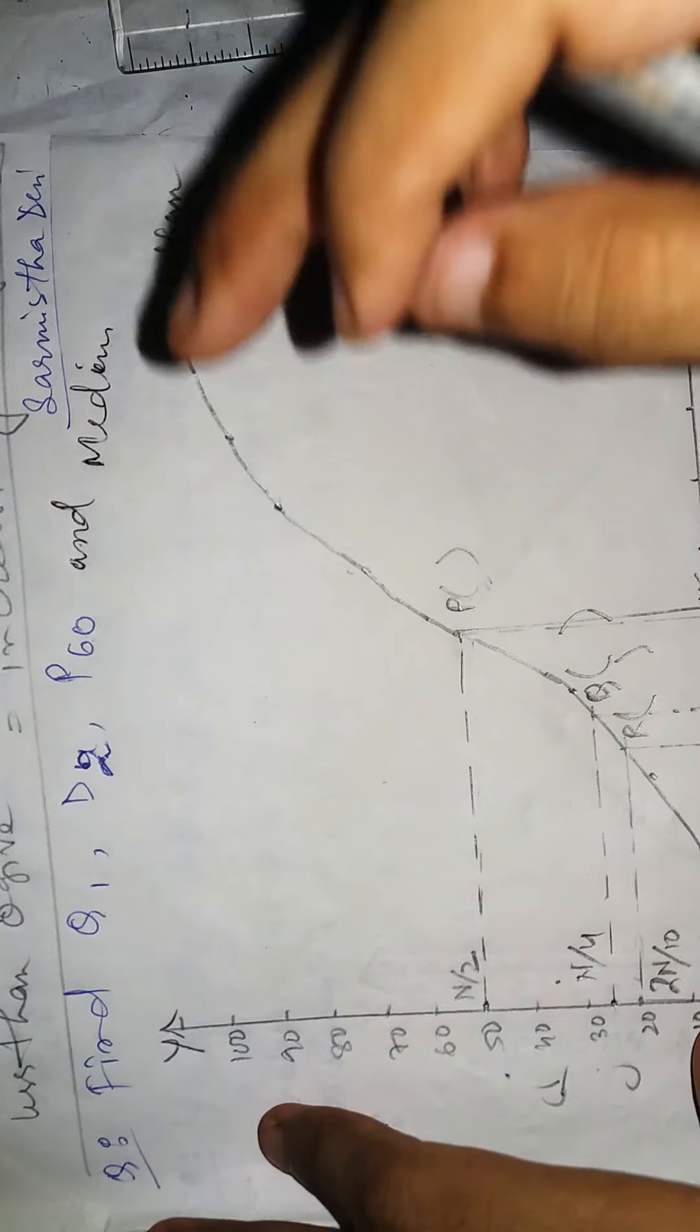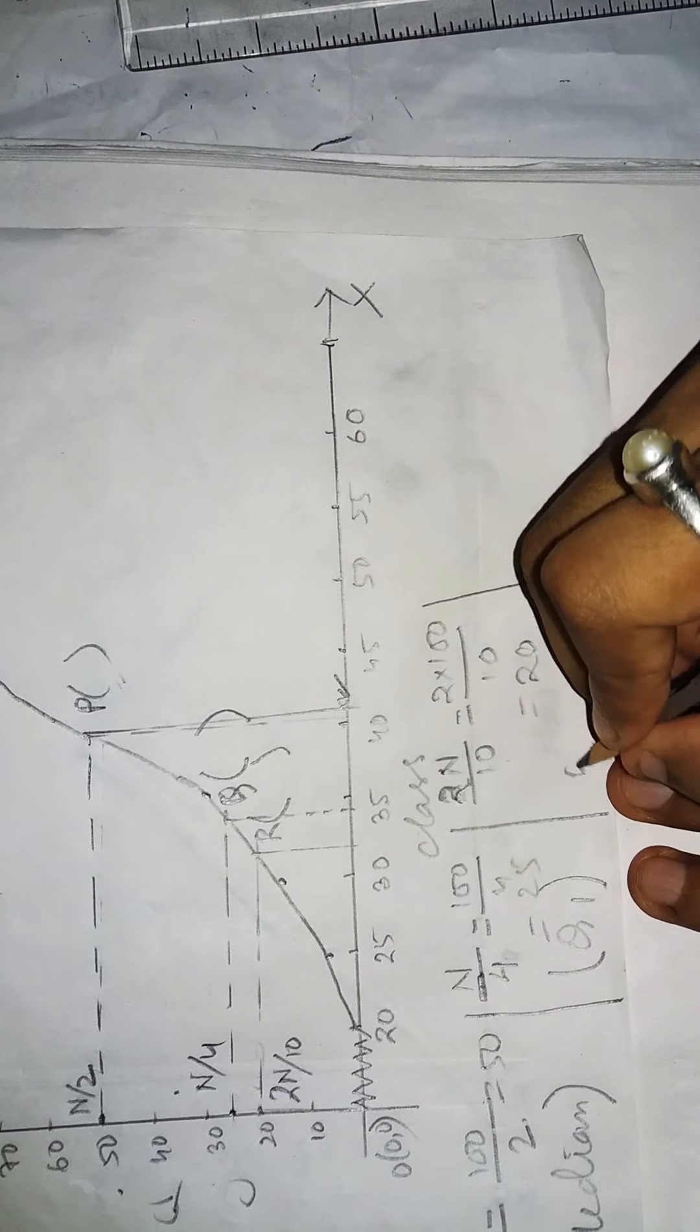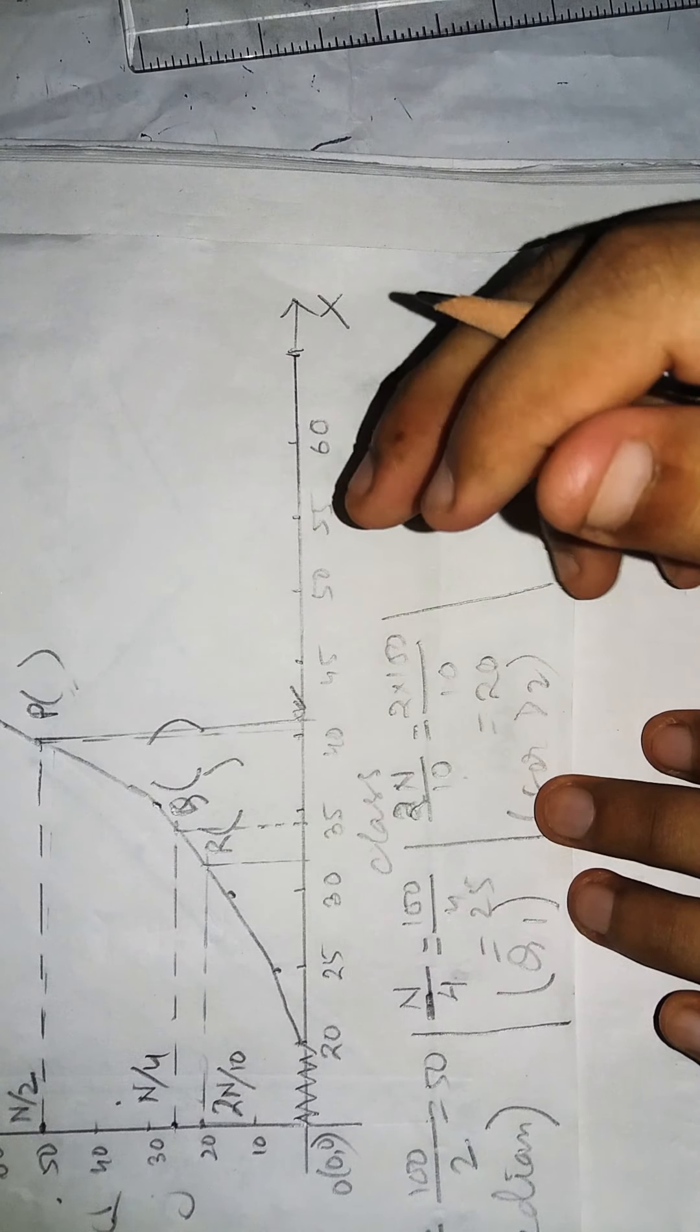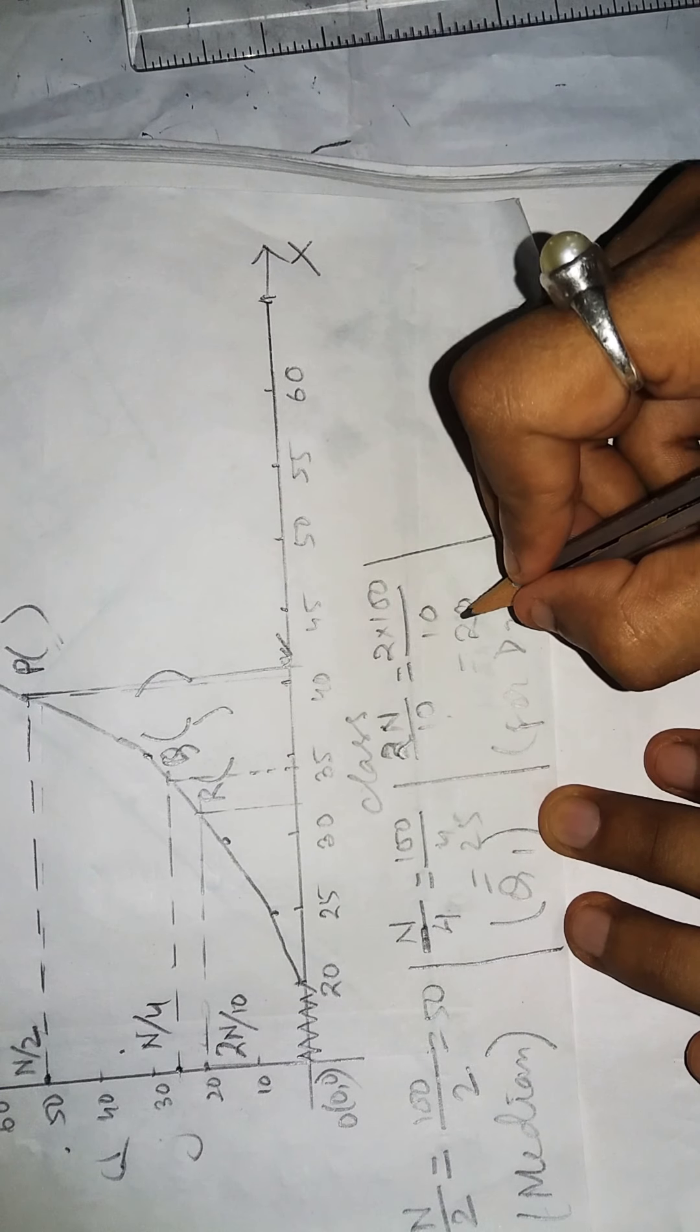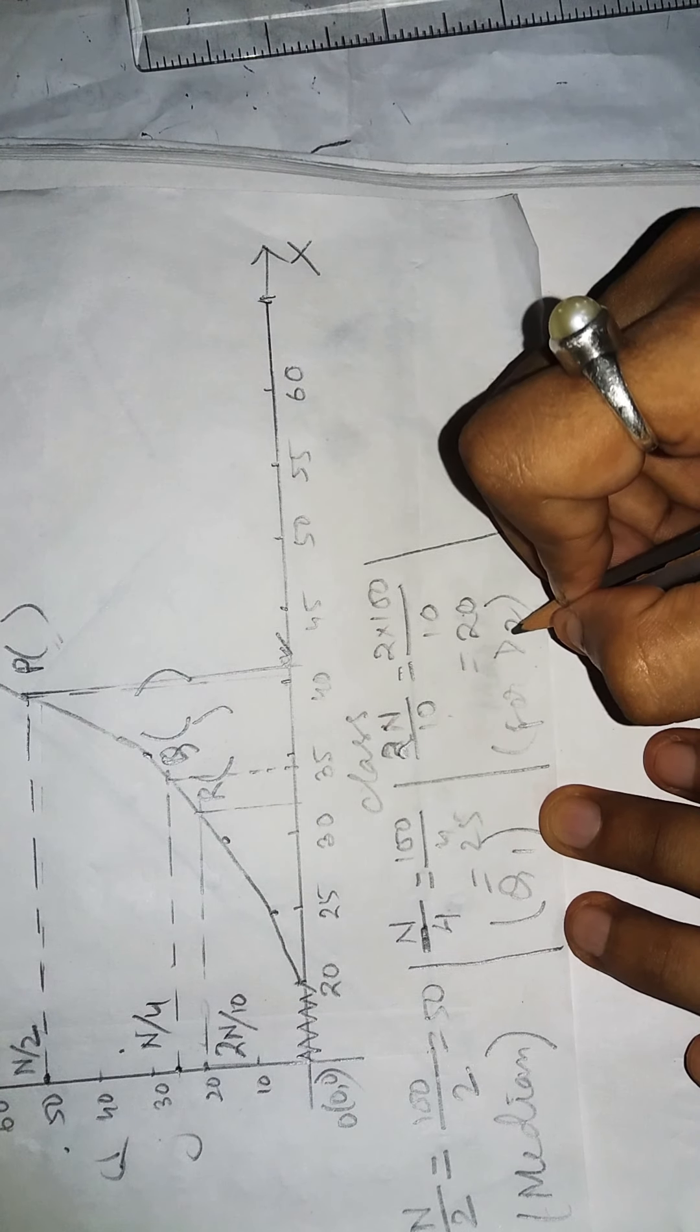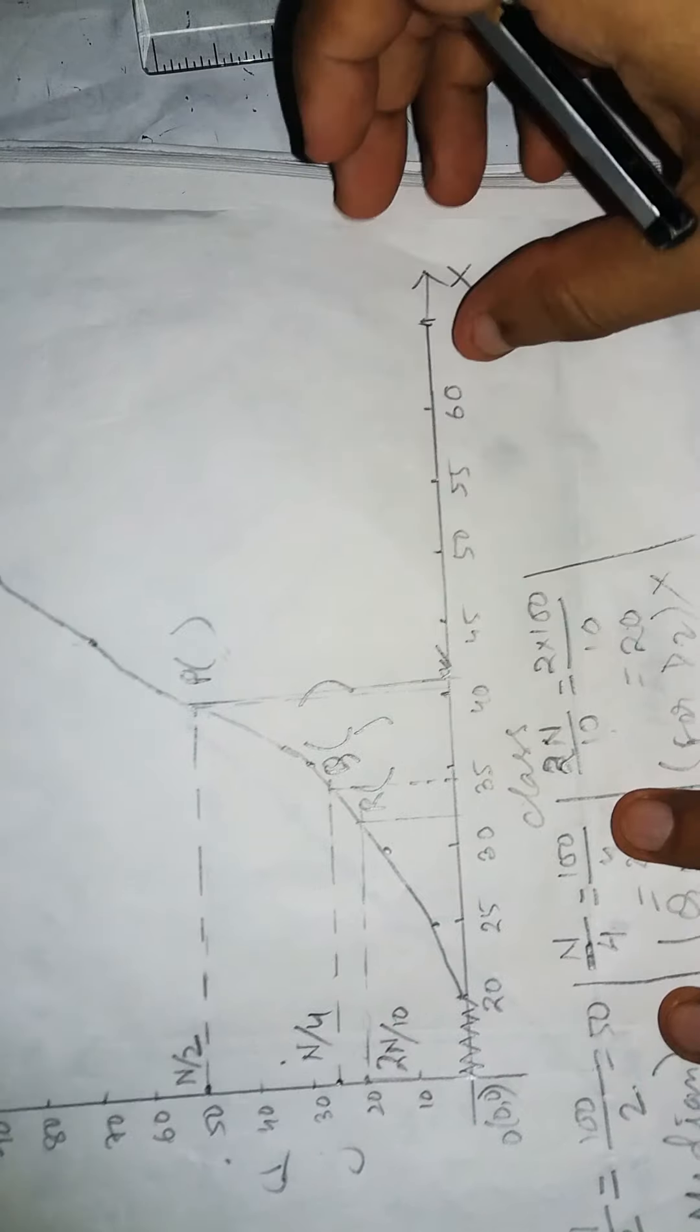Then again, you have to find P60 for percentile. Now for what? For P60. But there is a confusion for some students. Some of them think 25 is the value of D2, but it is not. It is not the value of D2. I will write all values of these partition values.